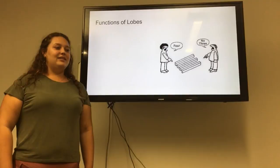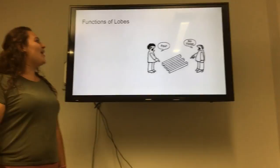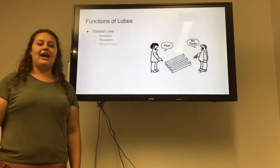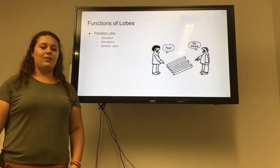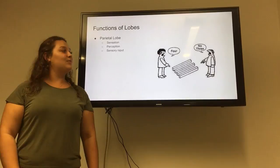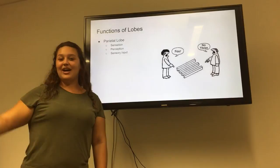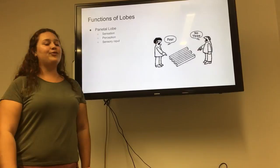Last but not least, we're going to talk about our parietal lobe. We have the parietal lobe with sensation, perception, and sensory input. Parietal and perception kind of work together. As we can see in this picture, perceptions are always changing — one end we have three sticks, and one end we have four. Another way to remember this is by how far away that ice cream truck is from your front door and how fast you can get money to get that ice cream.